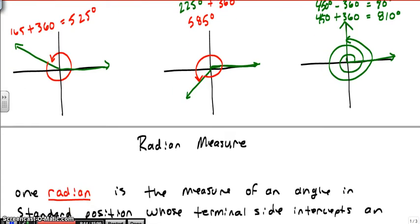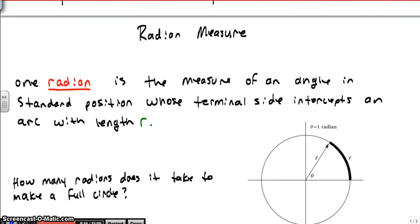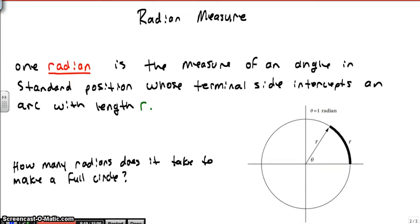So that's all with degrees. Now let's talk about radians. And everybody kind of flips out when we talk about radians because it's something that they haven't seen before. Don't get into that mindset where you don't understand it because it really isn't that bad. It actually makes more sense when we talk about rotation. So one radian is the measure of an angle in standard position whose terminal side intercepts an arc with length r.